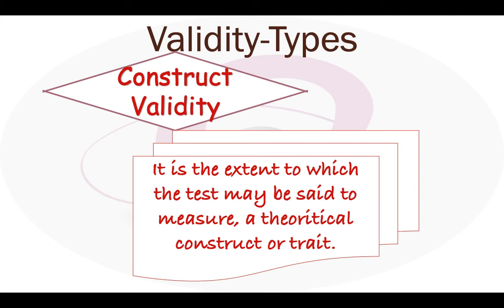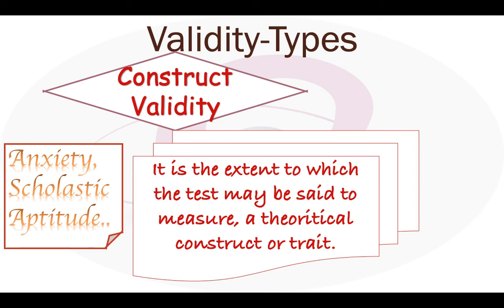Examples of constructs include anxiety, scholastic aptitude, mechanical comprehension, and writing comprehension. Construct validation requires the gradual accumulation of information from different sources. When we interpret assessment results as a measure of a particular construct, we are implying that the construct differs from others and that the results provide a measure of it, little influenced by external factors.